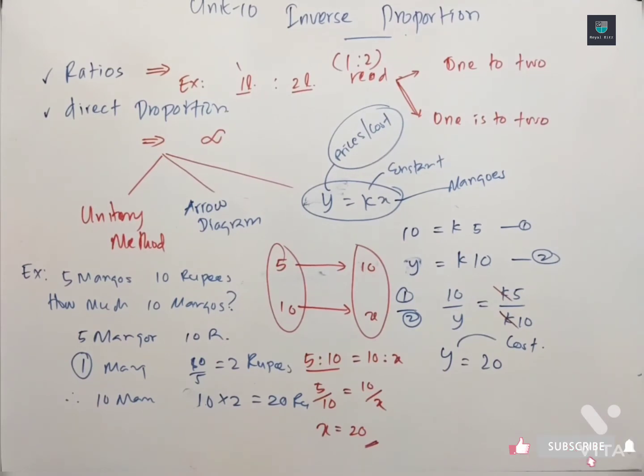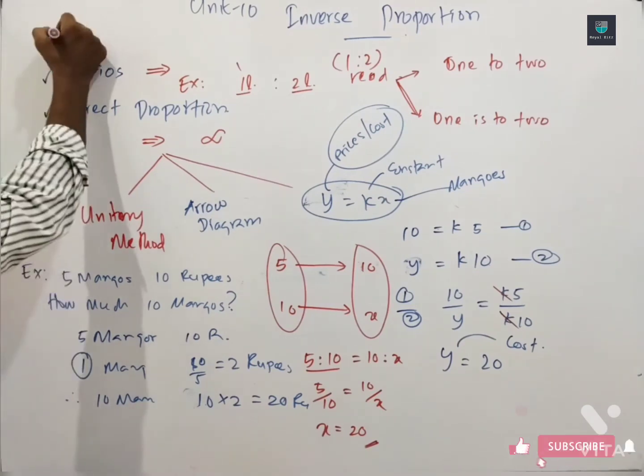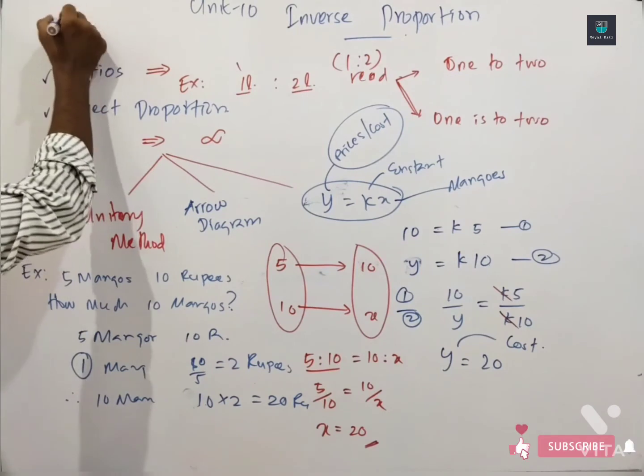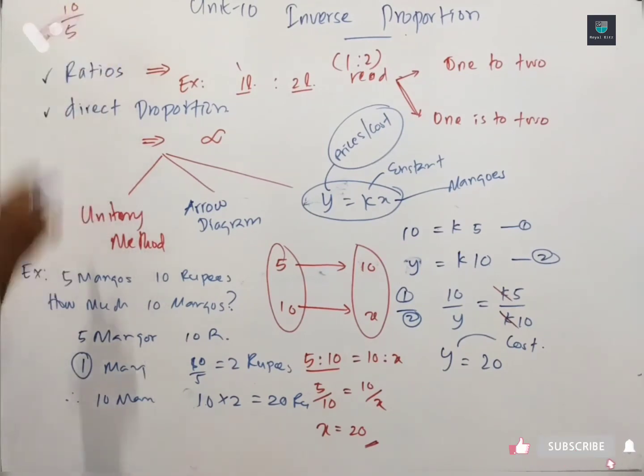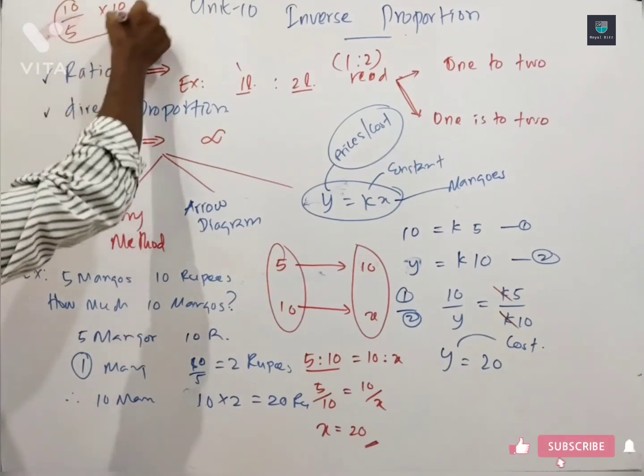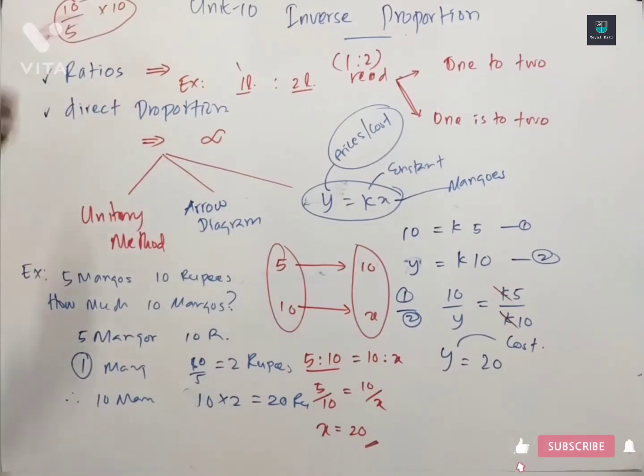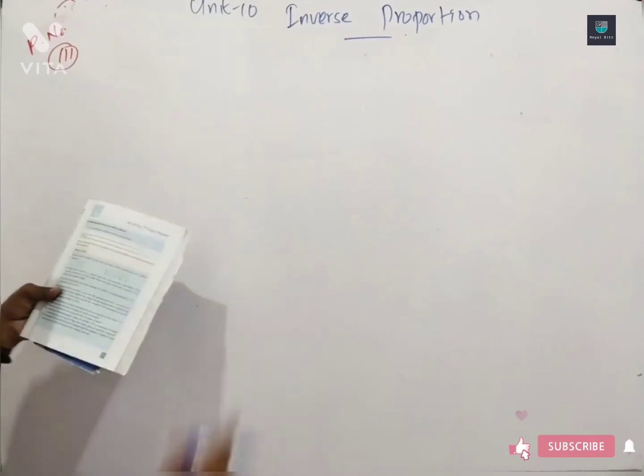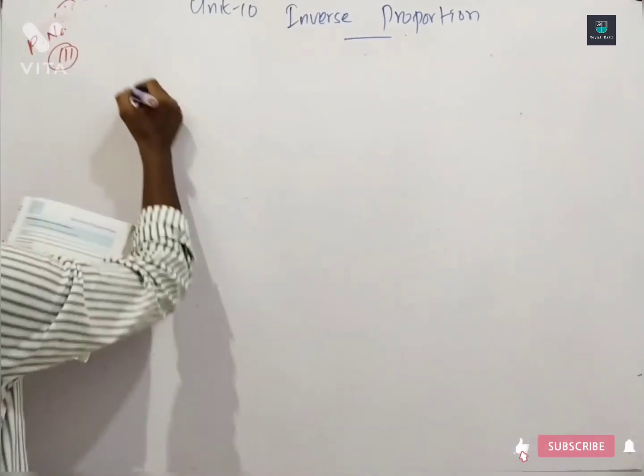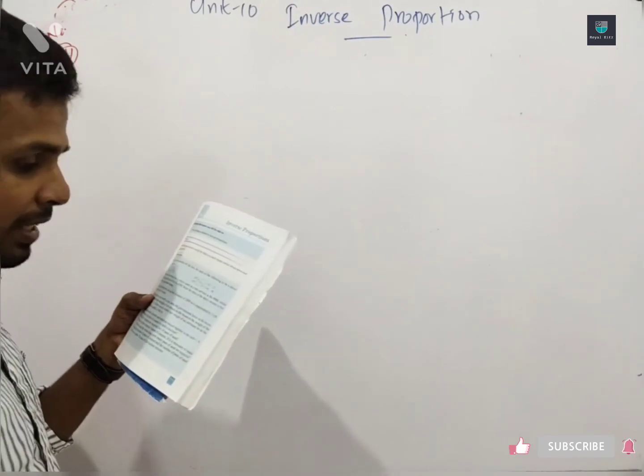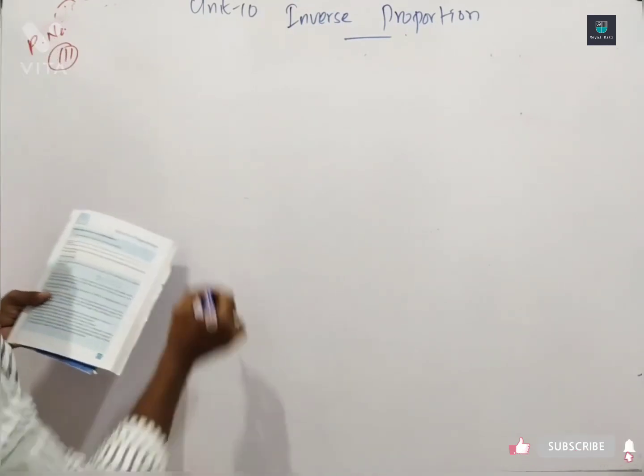That is unitary method, actual unitary method. This is basic. So find the number suitable for the box. That is same, unitary method. Find the number suitable for the box, each of the following to be direct proportions.